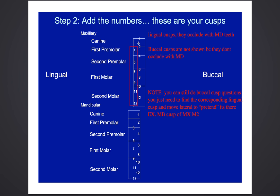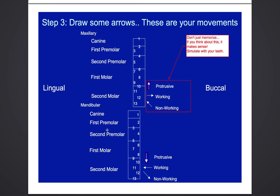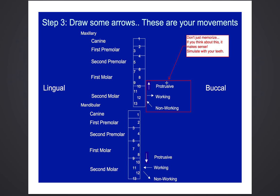It's really important that you remember the order, so draw this out a couple of times and get the hang for the pattern of the numbers — that's going to make things really easy for you. Then here's the lower, so just kind of memorize the number sequence here. Step three, we're going to draw some arrows representing your excursive movements. You'll notice different directions for the upper arch compared to the lower arch: a protrusive movement, a working movement, and a non-working movement. Don't just memorize this — simulate it with your own teeth, and it becomes intuitive.